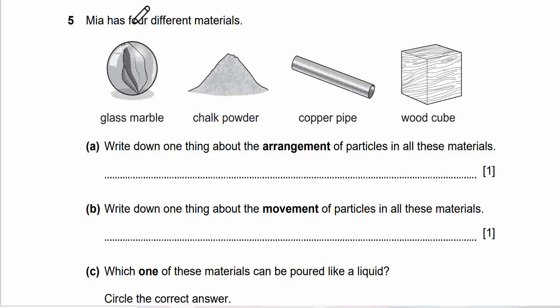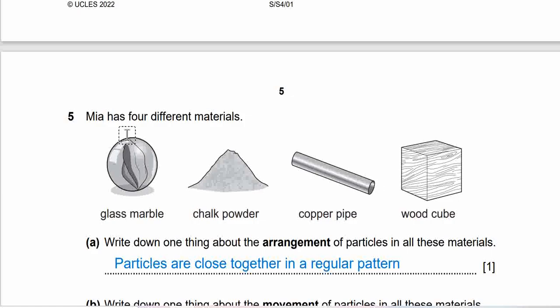Next question 5. Question 5 says, Vian has four different materials: glass marble, chalk powder, copper pipe, wood cube. Question A. Write down one thing about the arrangement of particles in all these materials. Get ready with the answer. They are all solid. So we write down particles are close together in a regular pattern for solids.